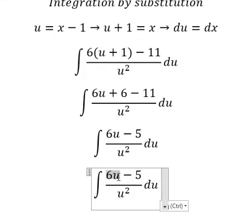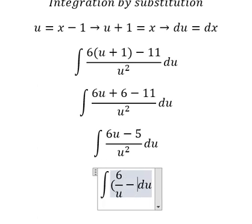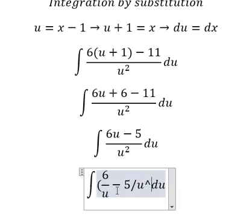So we have 6u divided by u square, so we have 6 over u minus 5 over u square.